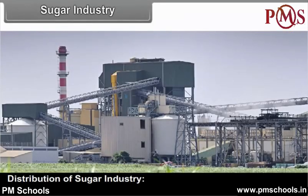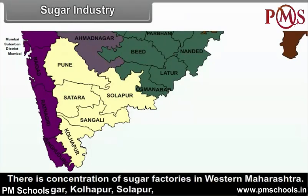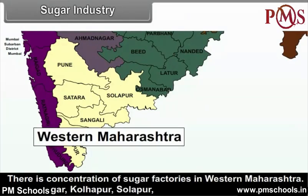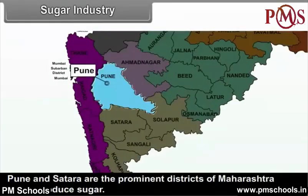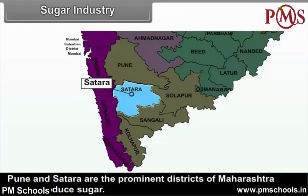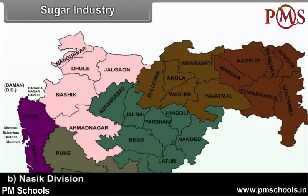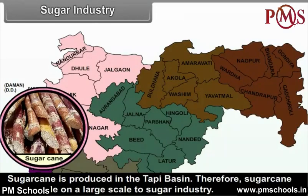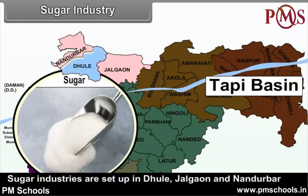The first sugar factory in Maharashtra was set up at Belhapur in Ahmednagar district in the year 1920. In Pune division, there is a concentration of sugar factories in Western Maharashtra; Ahmednagar, Kolhapur, Solapur, Pune and Satara are the prominent districts. In the Nasik division, sugarcane is produced in the Tapi Basin, so sugar industries are set up in Dhule, Jalgao and Nandurbar districts.